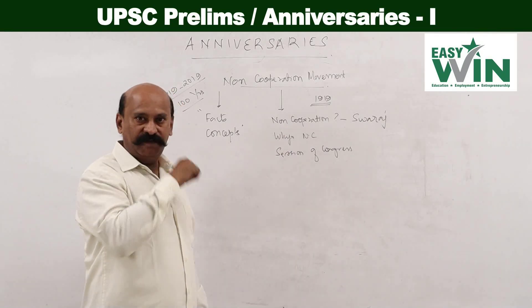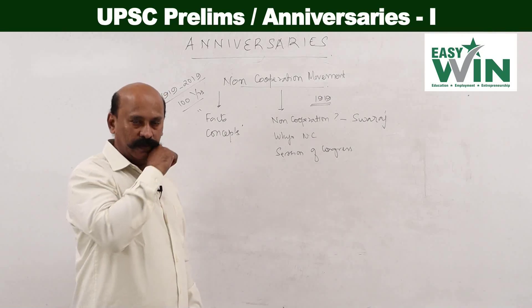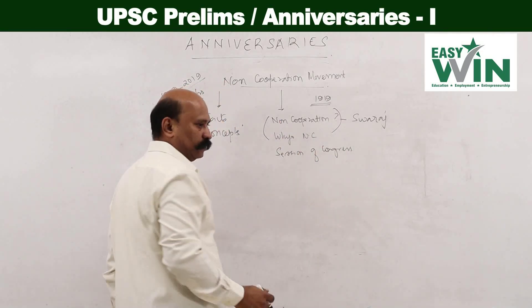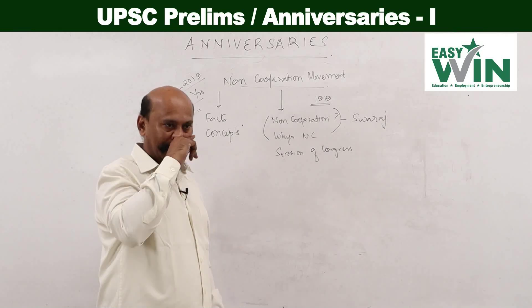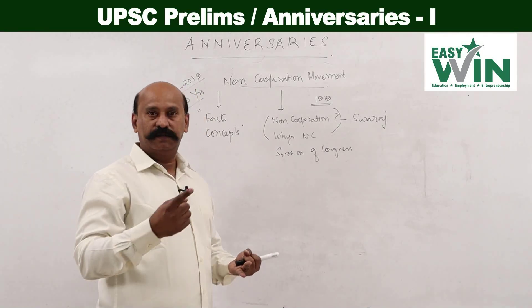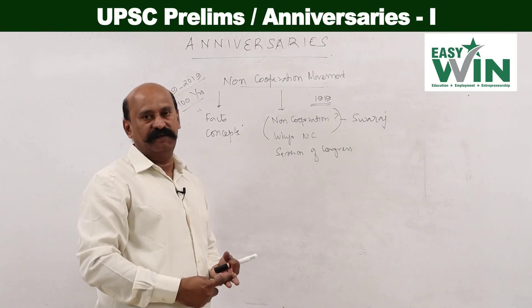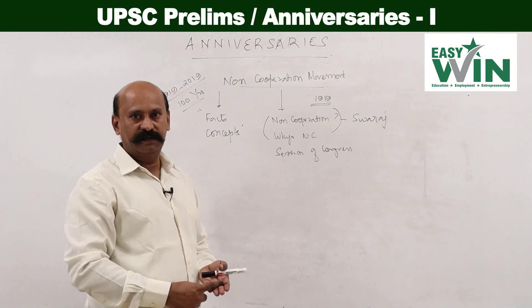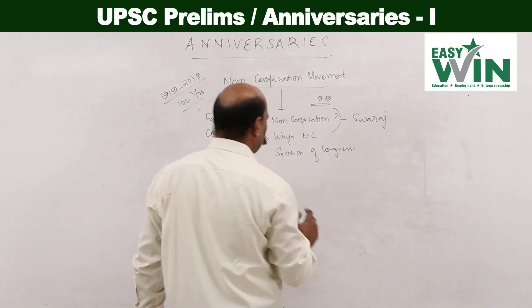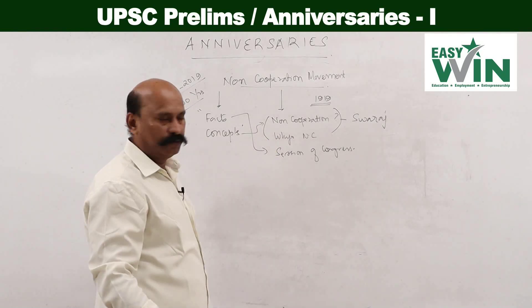Gandhi said: we cooperated and they established the empire; when we stop cooperating, they will have to go, and Swaraj will become possible. Non-cooperation means not cooperating with the British in the way they conduct administration. The students left the schools, lawyers stopped practicing — Motilal Nehru gave up practice, Rajagopalachari gave up practice, Chittaranjan Das gave up practice — and workers went on strike. This was approved in the Nagpur session of the Indian National Congress.